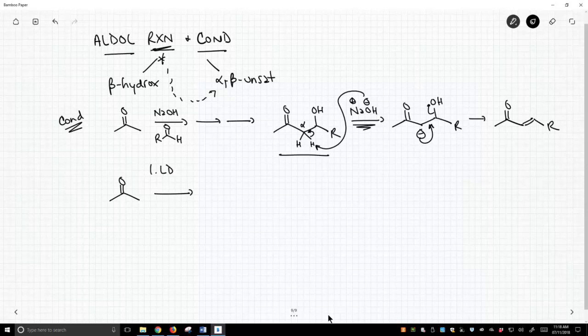So if we were going to make the beta-hydroxy, we'd say, okay, treat with LDA. That makes the enolate. The enolate we will react with an aldehyde. And then step three, we'll add water. We will get, indeed, as we'd expect—and again, this is the aldol reaction—we will get the beta-hydroxy product.